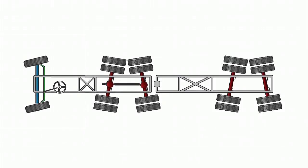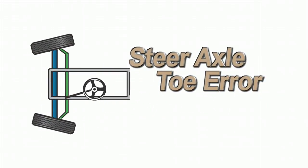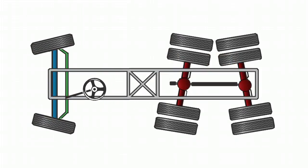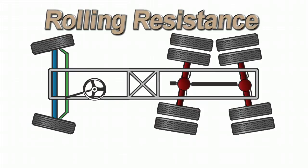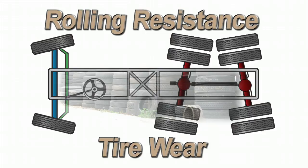To make matters worse, toe on the steer axle is out of spec too. These misalignment conditions are the two leading contributors to increased rolling resistance and accelerated irregular tire wear.